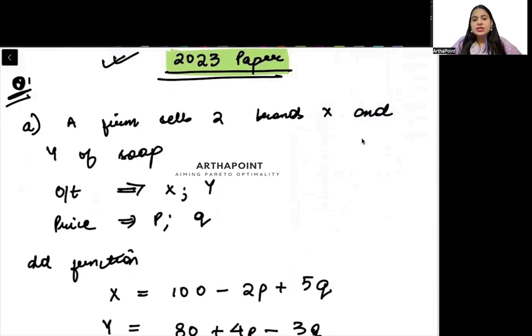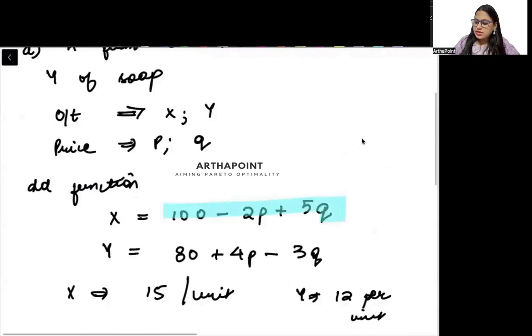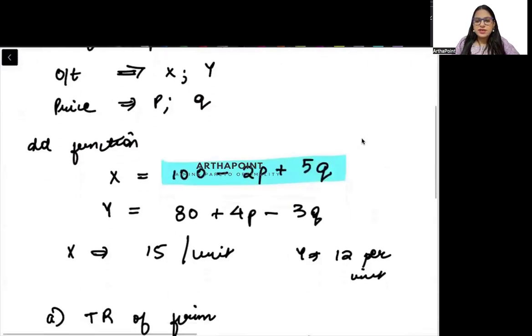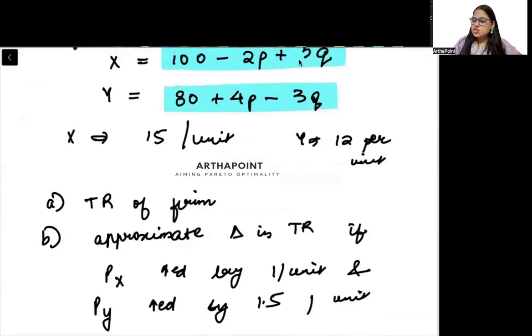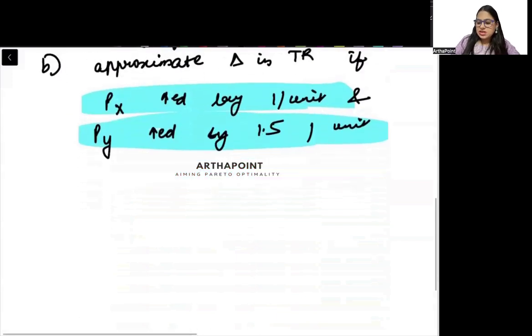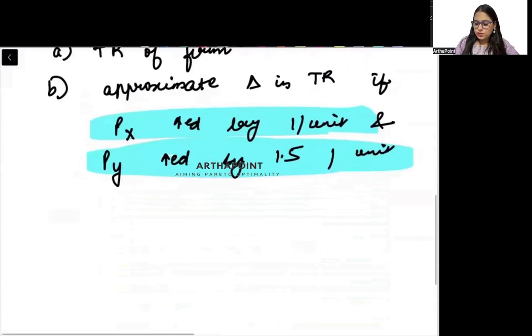When we talk about good X, its demand function is given as 100 minus 2P plus 5Q, and good Y's demand function is 80 plus 4P minus 3Q. You need to find the firm's total revenue and how total revenue changes when price of good X increases and price of good Y also increases. Beta, take a moment, try to solve this question yourself, then I will do it. We will go ahead and find the total revenue of the firm.